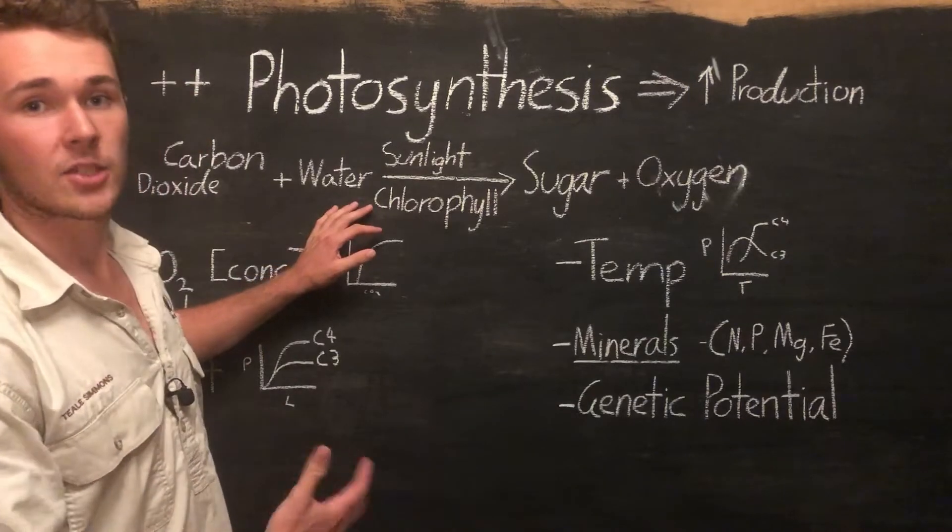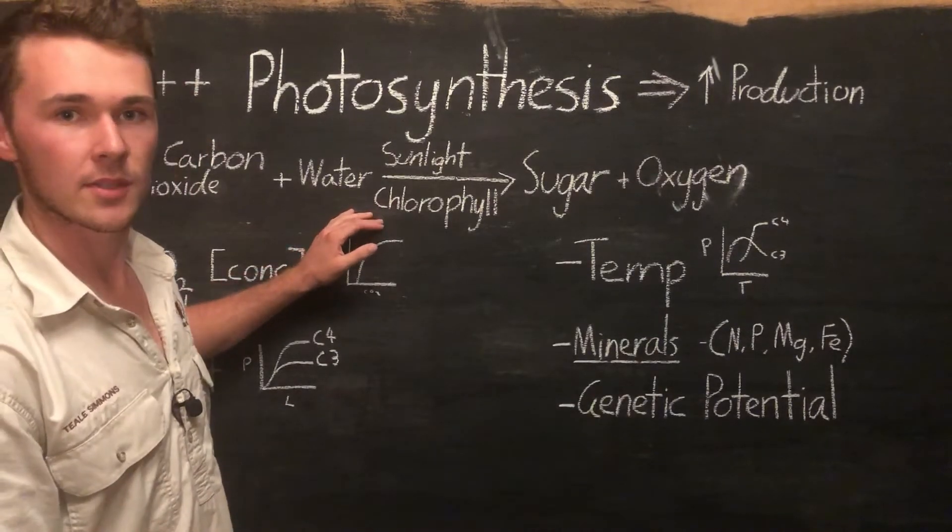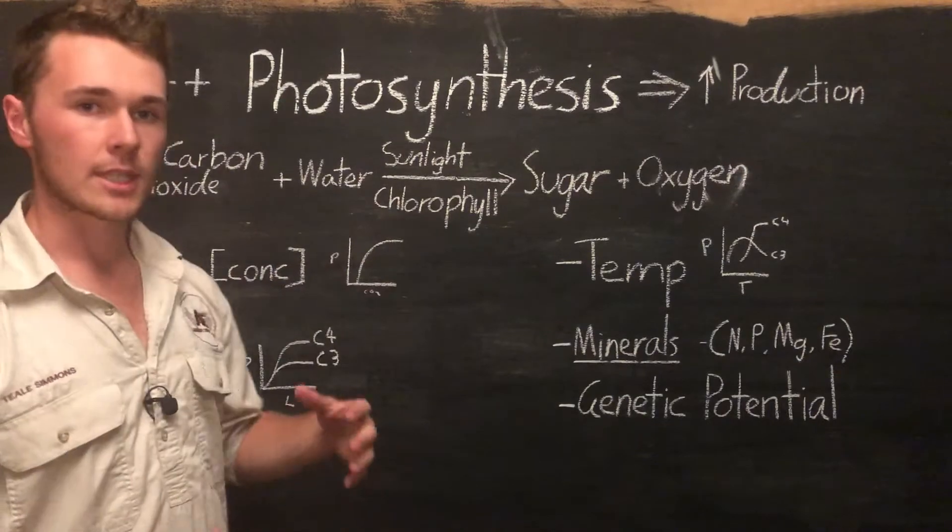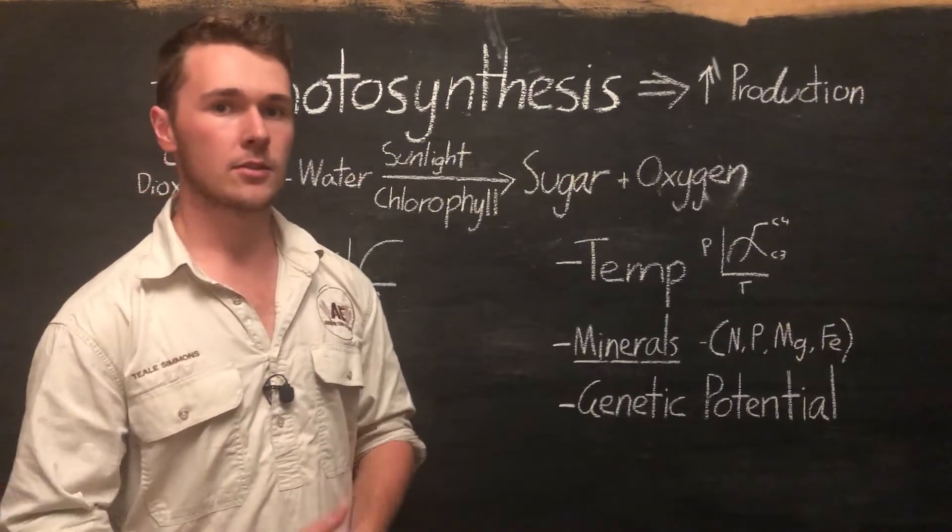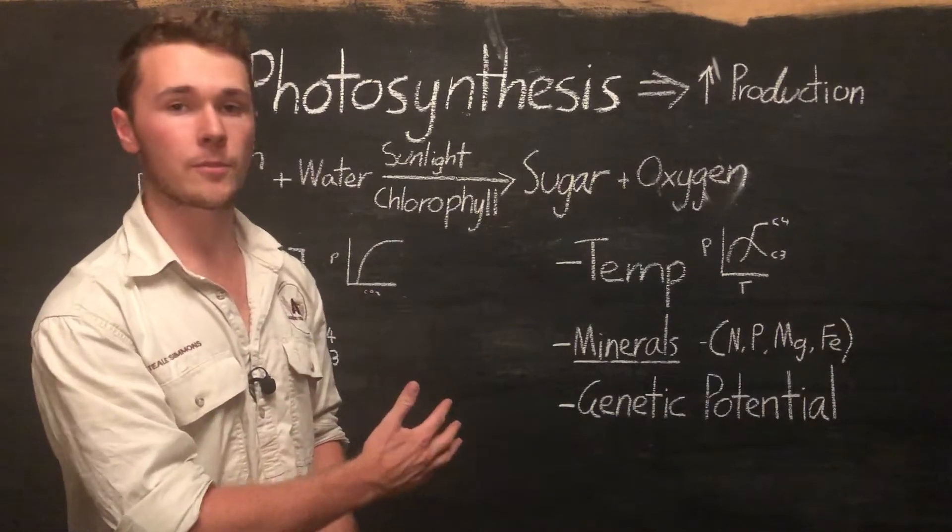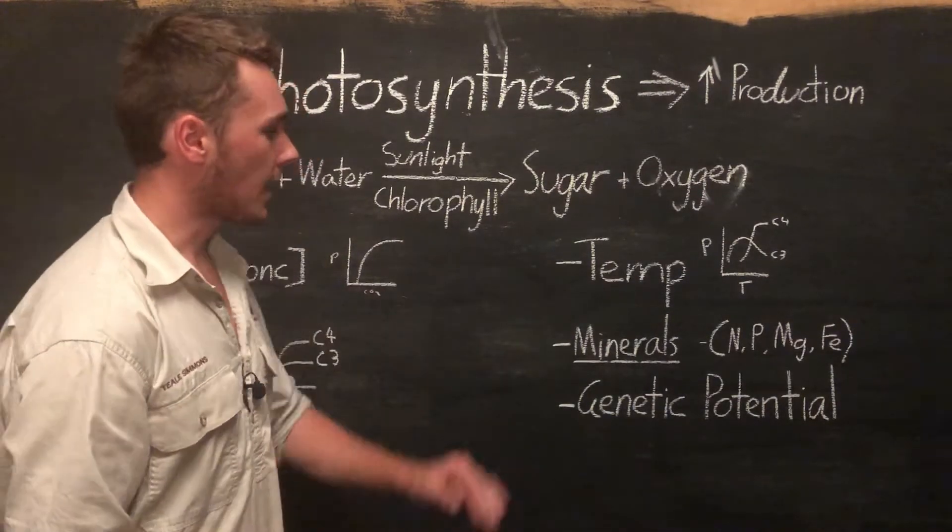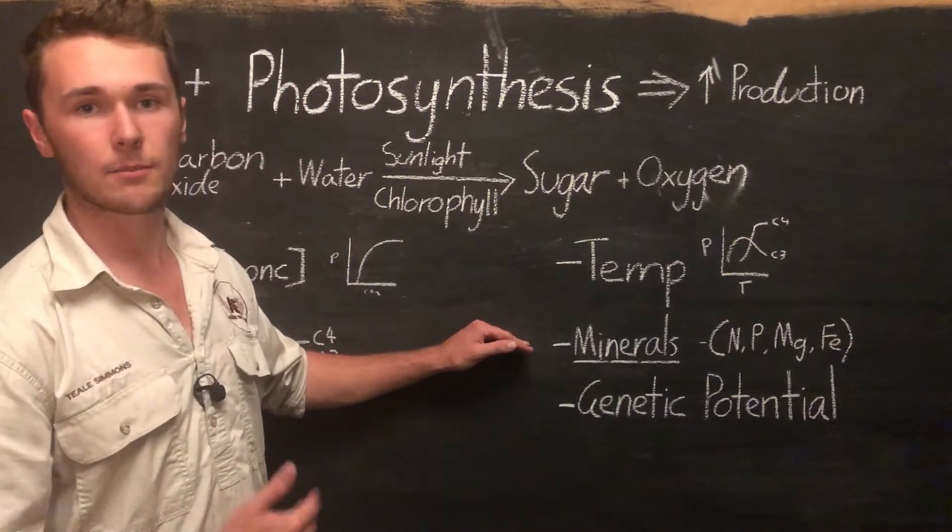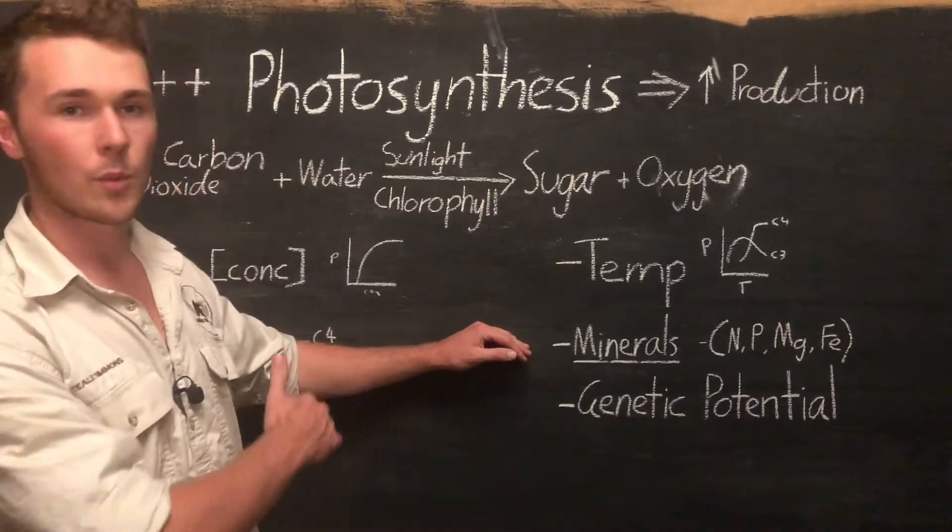For example, chlorophyll needs a certain amount of nitrogen. If the nitrogen isn't there, chlorophyll isn't going to be made by the plant, which means it's not going to photosynthesize. Making sure that the plant has the right nutrients to make all of the proteins required for photosynthesis is really important for increasing production.